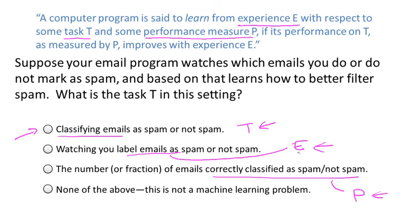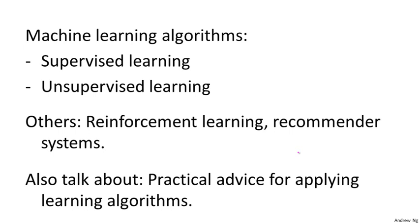In this class, I hope to teach you about various different types of learning algorithms. The main two types are what we call supervised learning and unsupervised learning. In supervised learning, the idea is we're going to teach the computer how to do something, whereas in unsupervised learning, we're going to let it learn by itself. You might also hear other buzz terms such as reinforcement learning and recommender systems, but the two most used types are supervised learning and unsupervised learning, and we'll spend most of this class talking about these two.